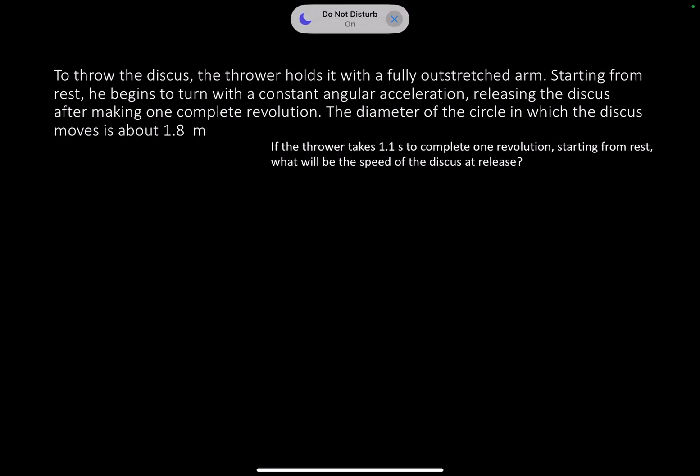Okay, on this one, we've got a discus thrower holding an outstretched arm, starting from rest. He begins to turn at a constant angular acceleration, releasing the discus after moving 1.8 meters. If the thrower takes 1.1 seconds, what will be the speed of the discus at release?